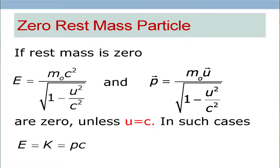Classically, if a particle has zero rest mass it does not exist — it is no longer a particle. But here, there is a possibility that the particle could have zero rest mass. E is equal to mc squared, where m was m0 divided by the square root of 1 minus u squared by c squared. Similarly, momentum was m0u divided by the square root of 1 minus u squared by c squared.